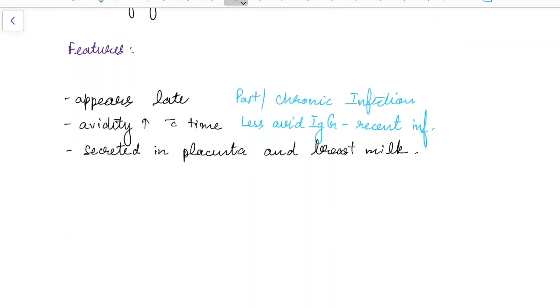Now let us see about some salient features of IgG antibody. IgG antibody appears late, so its presence indicates past or chronic infection. The avidity of IgG antibody increases with time, so the presence of less avid IgG antibody indicates a relatively recent infection. IgG antibody is secreted in placenta and breast milk.